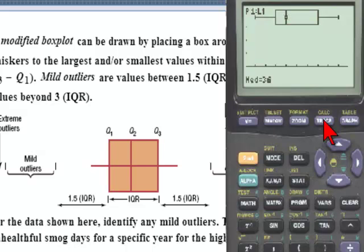To find the values of the five-number summary, we can use the trace key to find the median, and using the blue right arrow key, the Q3, the maximum, and using the left arrow key, back to the median, Q1, and the minimum.